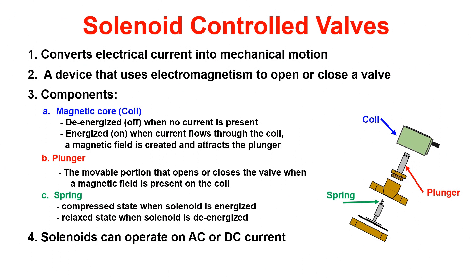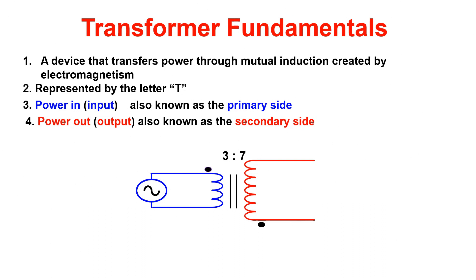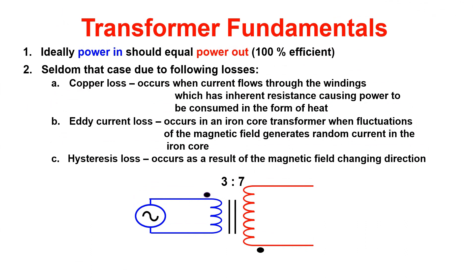The last topic is transformers. A transformer is a device used to transfer power through mutual induction created by electromagnetism. They are represented on a schematic by the letter T. The primary side is where the transformer gets its power, and the secondary side develops a new voltage for the circuit. In a perfect world, power in would equal power out, but because of physics and impurities in manufacturing, some losses are seen.